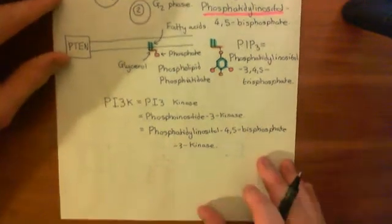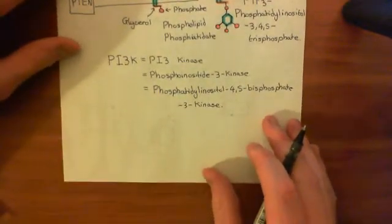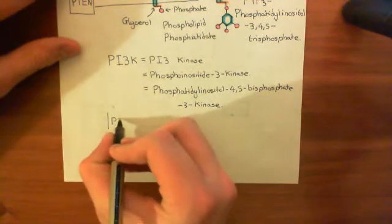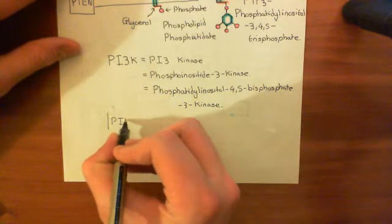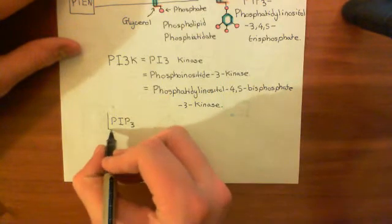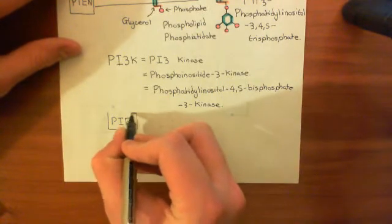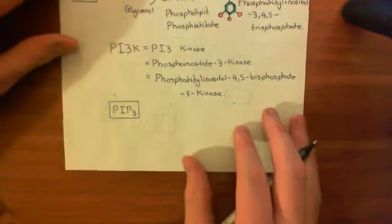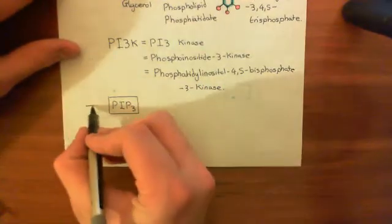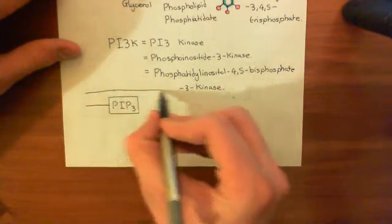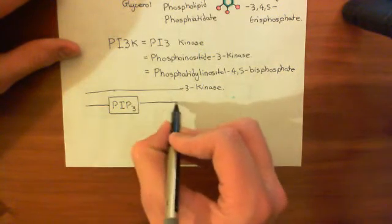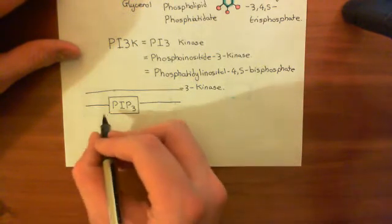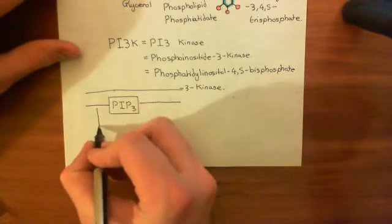So now what's going to happen is that PIP-3, which I from now on will just denote as a box because it's easier than drawing its structure out. I haven't actually drawn its structure out, I've drawn a cartoon, a nice cartoon though of its structure. So here's our PIP-3 molecule in the phospholipid bilayer.